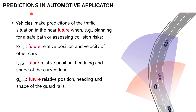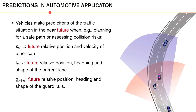Now let's look at the prediction problem, again starting with automotive applications. Both advanced driver assistance systems and autonomous vehicles need to make predictions of the traffic situation in the near future — for example, when planning a safe path or assessing collision risks. Since we have no observations of the future yet, we rely on predictions. We would like to predict the relative position and velocity of other cars, as well as the position, heading, and shape of the current lane and guardrails, so that we can plan a path ahead and stay within our own lane.